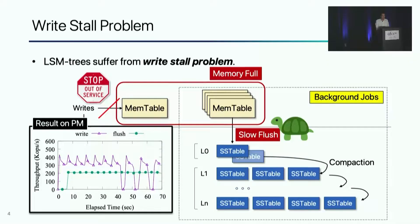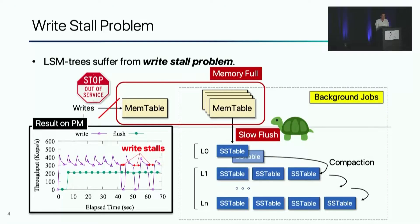Even with fast persistent memory, background flush is still slower than foreground write, and write stalls occur as a result. Although persistent memory is faster than disk, simply replacing disk with persistent memory does not solve the write-stall problem.